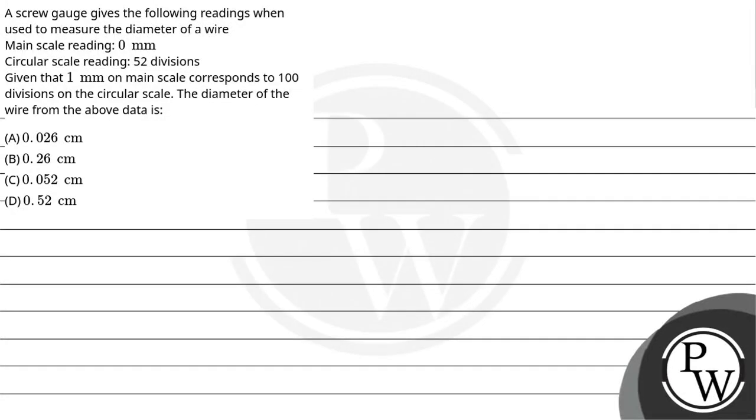Hello! Let us read the question. A screw gauge gives the following readings when used to measure the diameter of a wire. Main scale reading: 0 millimeter. Circular scale reading: 52 divisions. Given that one millimeter on main scale corresponds to 100 divisions on the circular scale, the diameter of the wire from the above data is...